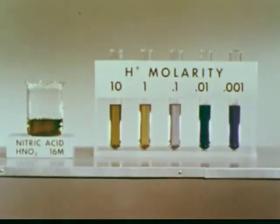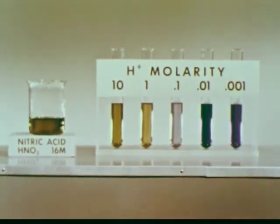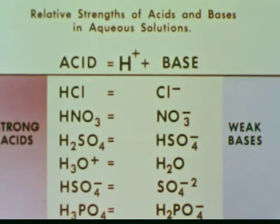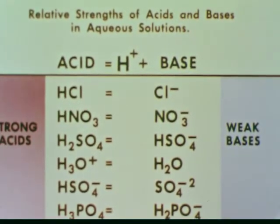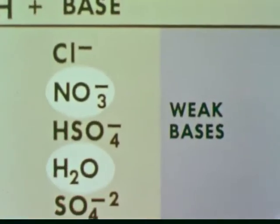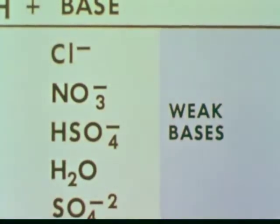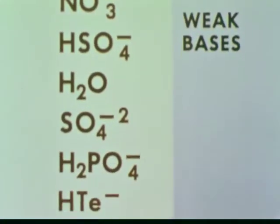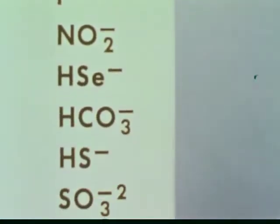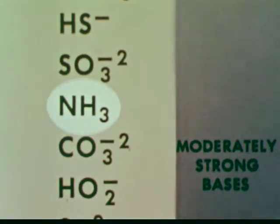If we are to reduce the acidity, we need to have present a stronger proton acceptor — that is, a stronger base than water or nitrate ion. This chart shows the relative strengths of certain acids and bases. We see that nitrate ion and water are among the weak bases, that is, poor proton acceptors. Looking down the list for a stronger proton acceptor, preferably a base containing a high percentage of nitrogen, we find NH3, ammonia.